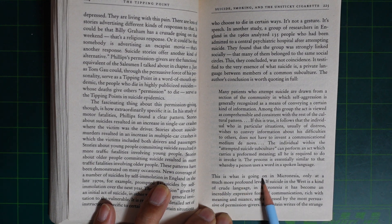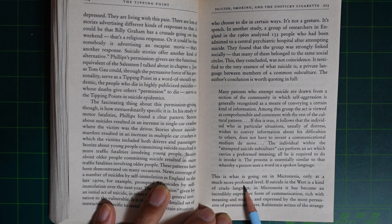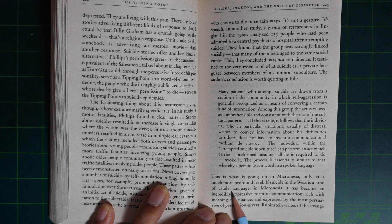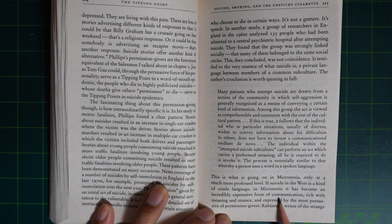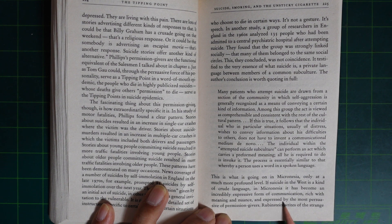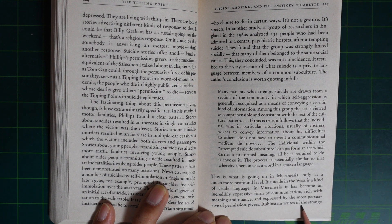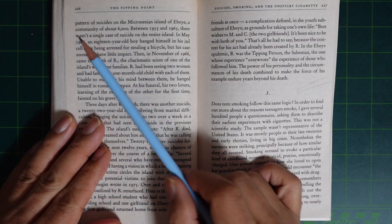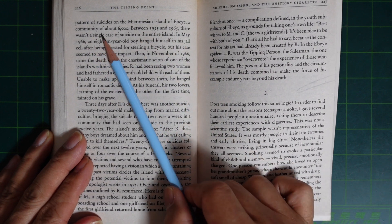This is what is going on in Micronesia, only at a much more profound level. If suicide in the West is a kind of crude language, in Micronesia it has become an incredibly expressive form of communication, rich in meaning and nuance, spread by the most persuasive of permission givers. Consider the strange pattern of suicide on the Micronesian island of Ebeye, a community of about 6,000.